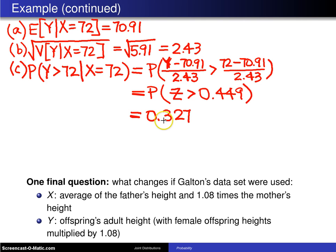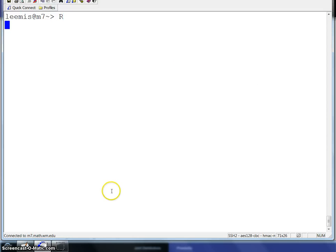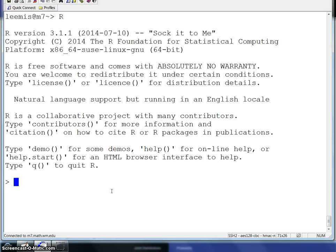And so at this point, I'm going to go to R and calculate these. So at this point, I'll go into the R program. And one way to calculate the probability Z is greater than 0.449 is to say 1 minus pnorm of 0.449. And that will give you the 0.327.